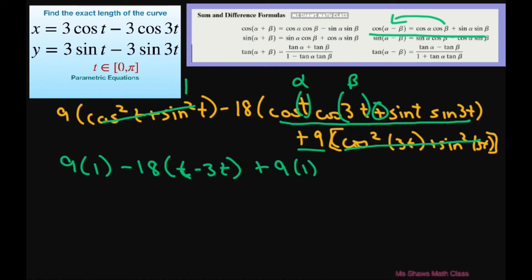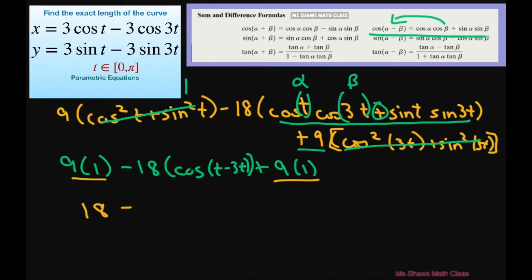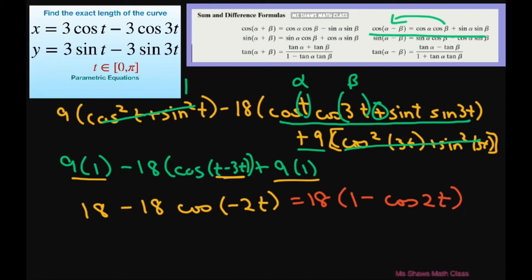So this becomes cosine of (t minus 3t). Simplifying, we get 18 minus 18 cosine(−2t). Since cosine is an even function, we can remove the negative sign to get 18 minus 18 cosine(2t), and factoring out 18 gives 18 times (1 minus cosine(2t)).